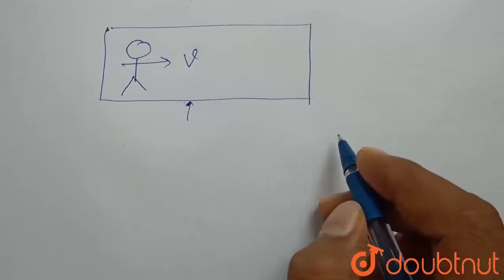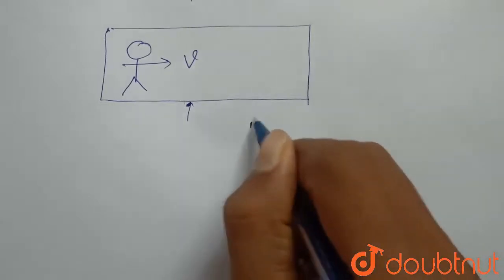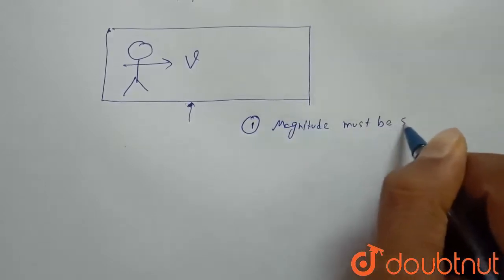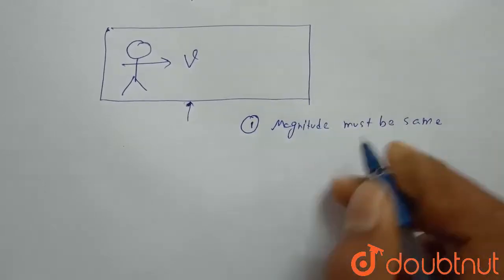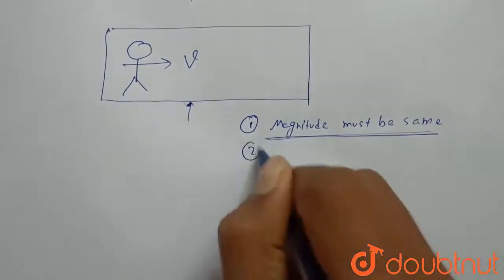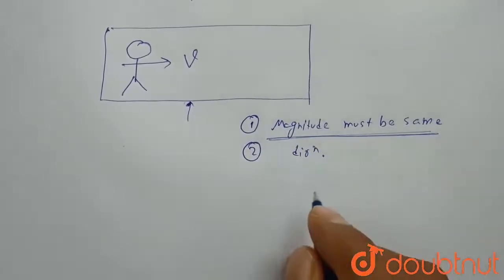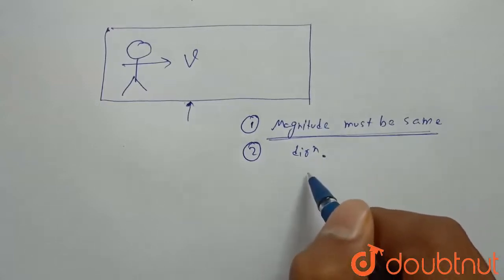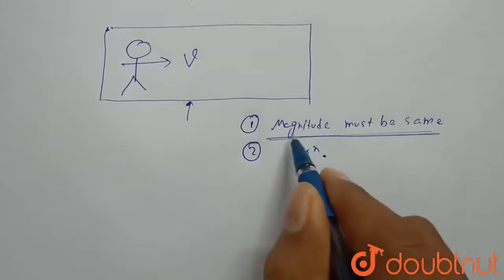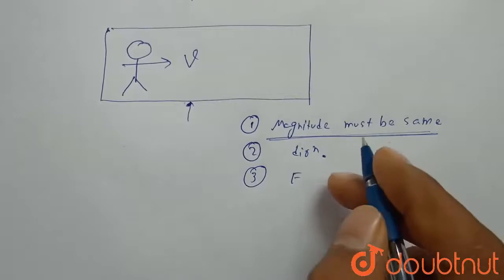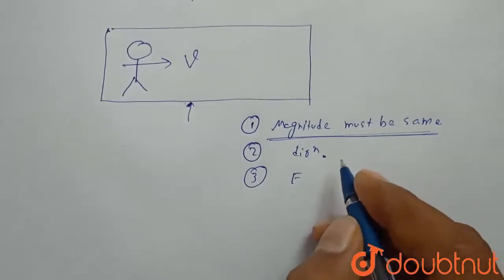What are the conditions on magnitude and direction of velocity? First condition is magnitude must be same, magnitude must remain same, magnitude cannot vary. Second condition is direction must remain same because if direction changes then velocity vector will change, or if magnitude changes then velocity vector will change. Third, no external force is applied.